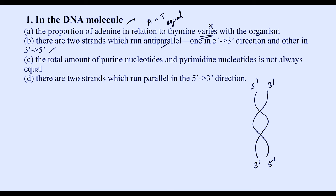Option C states that the total amount of purine nucleotides and pyrimidine nucleotides is not always equal. Actually, purine and pyrimidine nucleotides will always be equal, so option C is wrong. Option D says the two strands run parallel — that is also wrong, as they are always anti-parallel. The correct answer is B.